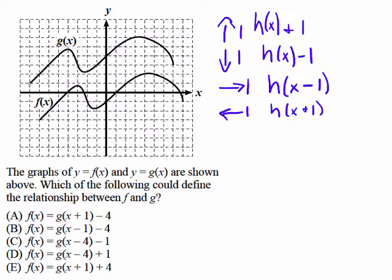This function G is 1, 2, 3, 4 up from F and 1 to the left of F. So to move G to F, I want to define the relationship between F and G, and all my answer choices say F(X) equals G something.